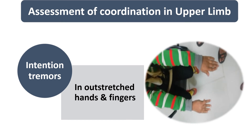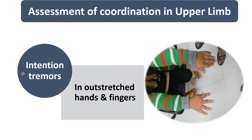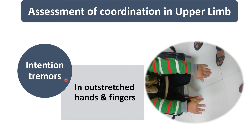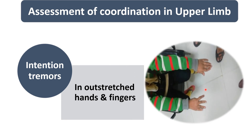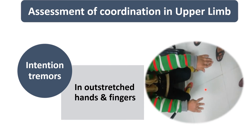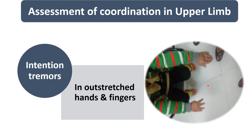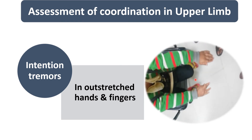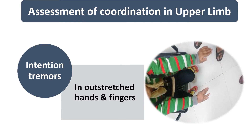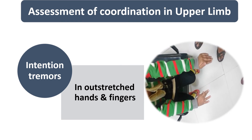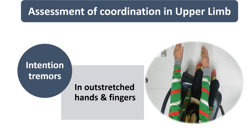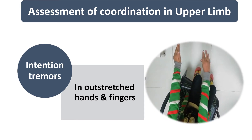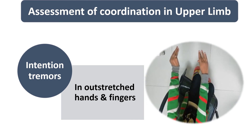We also observe the child for intentional tremor, which is characteristic of cerebellar disease. For this, we ask the child to outstretch the hands and fingers. In this video, you can see the child is having intentional tremor when keeping the hands outstretched against gravity. This is characteristic of cerebellar disease.